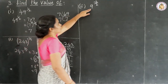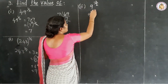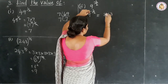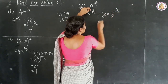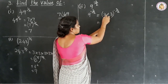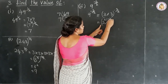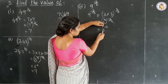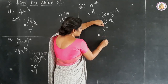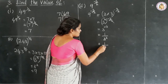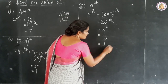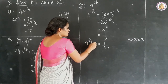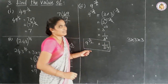Question number 3: 9 to the power of minus 3 by 2. First, 9 equals 3 × 3 equals 3 squared. So (3 squared) to the power of minus 3 by 2. The 2s cancel, giving 3 to the power of minus 3. Now, 3 to the power of minus 3 equals 1 by 3 to the power of 3 equals 1 by (3 × 3 × 3) equals 1 by 27. Therefore, 9 to the power of minus 3 by 2 equals 1 by 27.